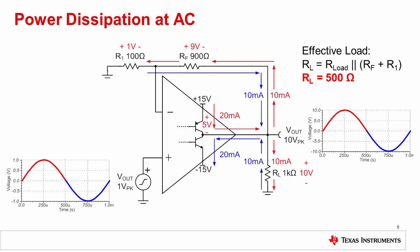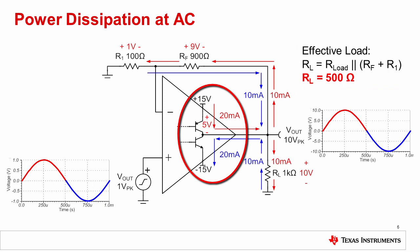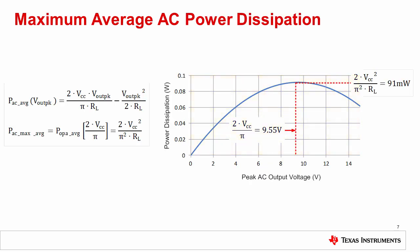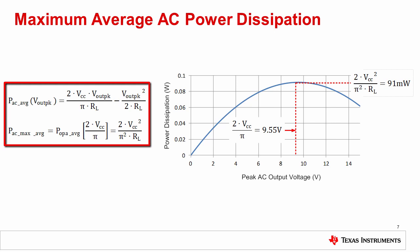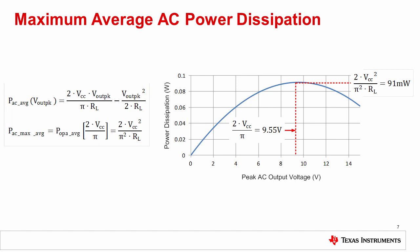Up until this point, we've been discussing the DC power dissipation of an op amp, which is the worst case condition. In the case of an AC sinusoidal signal, the output current changes continuously. To determine the temperature rise on the device, we'll need to look at the average power dissipation. Notice that the effective load is still the load resistance in parallel with the feedback network. Also notice that the power dissipation will be balanced across both output transistors, whereas at DC, current was sourced from only one transistor. The plot on the right shows the average internal power dissipation of an op amp versus peak AC output voltage. Note that for VCC equal to 15 volts, the maximum of 91 milliwatts occurs when the peak output voltage is approximately 9.55 volts. The relationship for maximum average AC power transfer is also given on the left as a function of VCC and load resistance. Note that this relationship assumes that the AC signal is sinusoidal and that the load is resistive. The relationship for reactive loads or non-sinusoidal signals would be different.